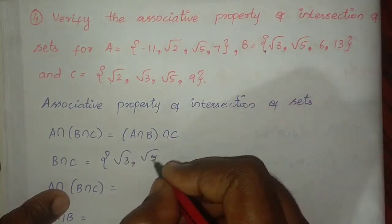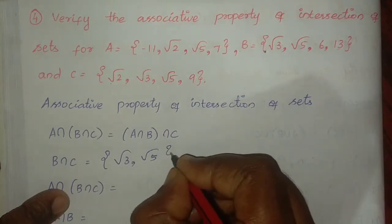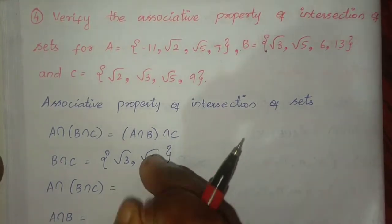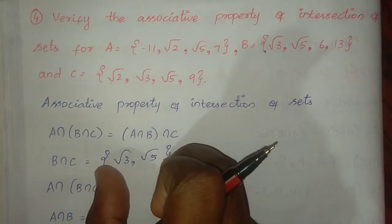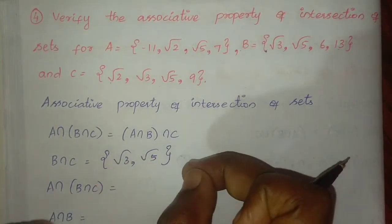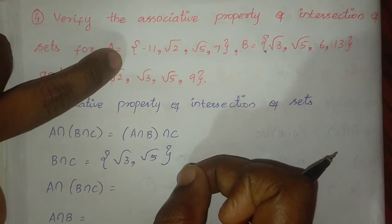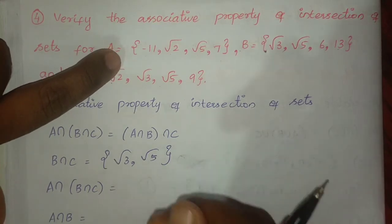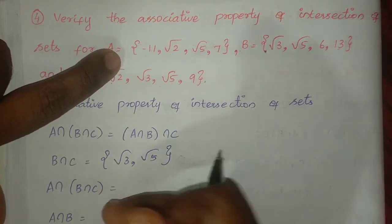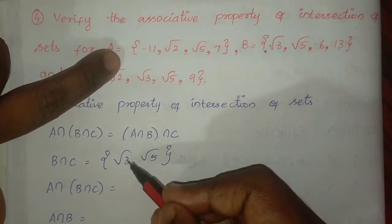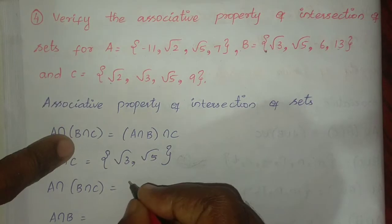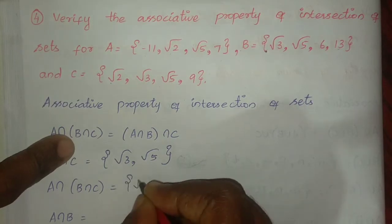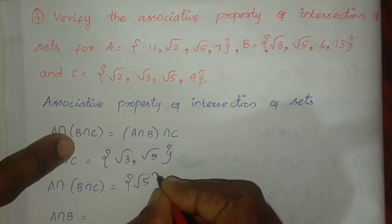B intersection C equals {root 3, root 5}. Now compare this with set A. Root 5 is the common element. Root 5 is in the intersection.